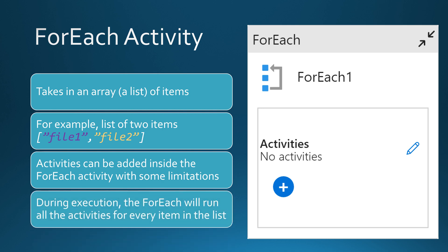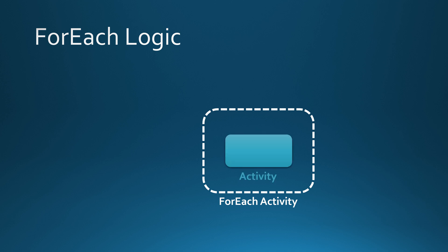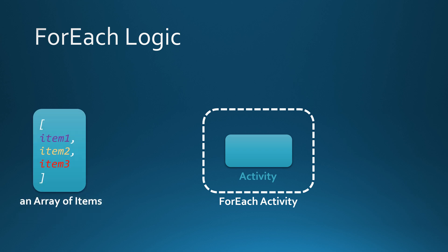During execution, the ForEach activity will run all the activities for every item in the list. So if we have a list of two items, the ForEach activity will execute those activities two times, and if we have a list of 100 items, it will execute those activities 100 times. Now let's check out how the ForEach logic works. Inside the ForEach activity we have another activity to execute. Then we have our array of items. The values in this array could be any data type supported in Data Factory — strings, integers, or even objects.